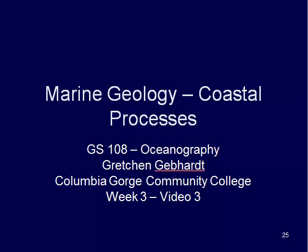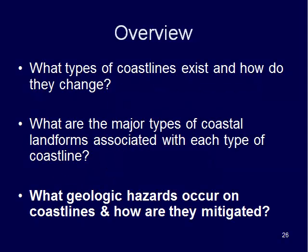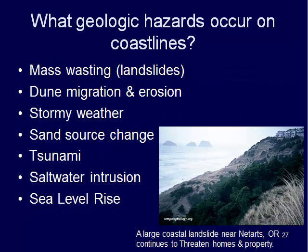Welcome back. We are going to continue on in week three with Coastal Processes, and talk in more detail about some of the different hazards that exist on coastlines and how we mitigate or fix those problems. Some of the hazards that exist include mass wasting or landslides, dune migration and erosion, stormy weather like hurricanes, sand supply chains, tsunamis, saltwater intrusion, and changes in sea level.